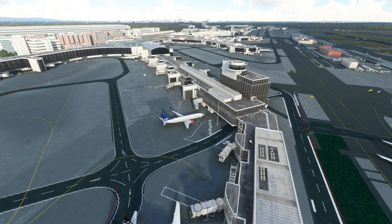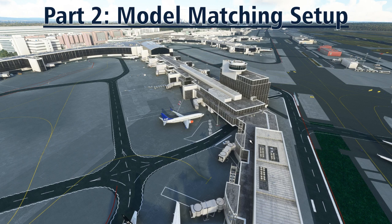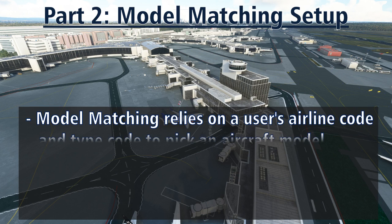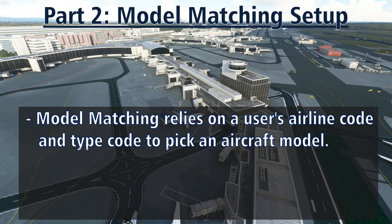The process of taking information about nearby VATSIM airplanes and assigning them a specific model within our sim is called model matching. How well the sim uses all these beautiful models we just downloaded depends on how well we configure our model matching. In essence, model matching is just a simple set of rules. Our client will go through the list of rules in order to try and find a match for a specific airplane. The information model matching uses is very limited — it relies on the airline code and aircraft type code of the user. This is why it's essential for all pilots to accurately specify their airline code and aircraft code when they log on.